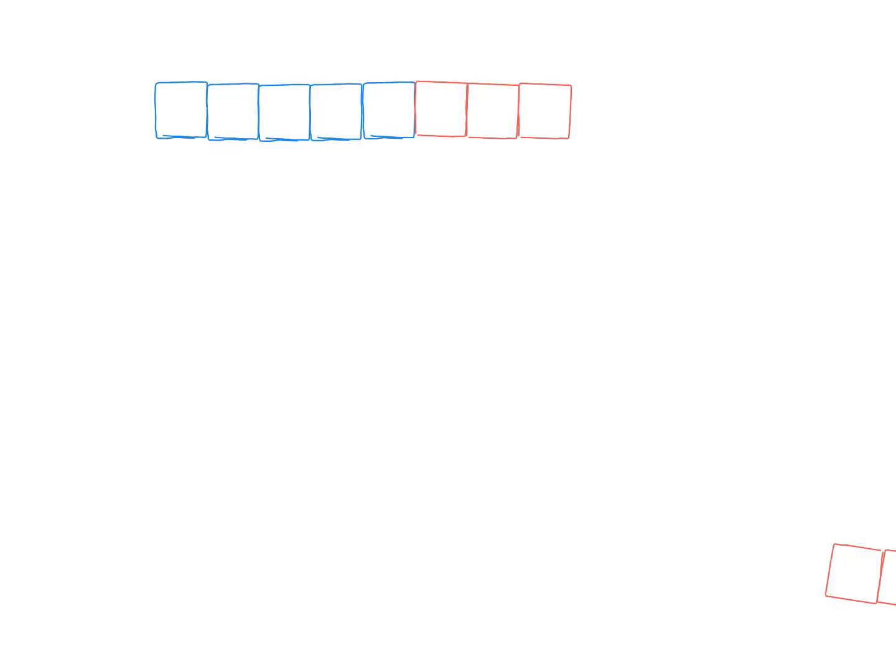Another way you could show it is have students build a cube train. And you could say, here's a cube train with five blues and three reds. And using that cube train, you could say,